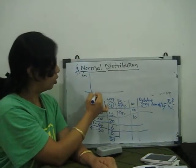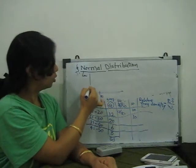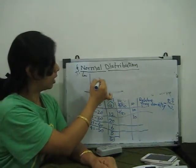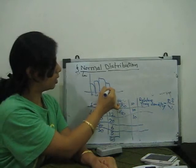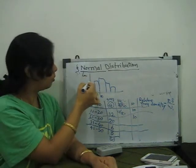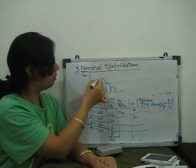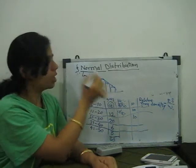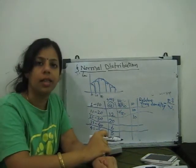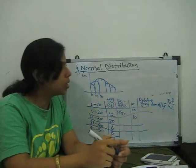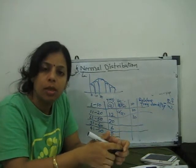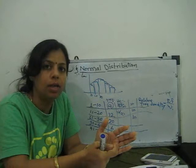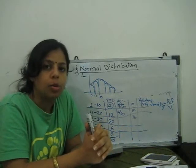Now we plot the histogram with marks on the x-axis (0, 10, 20, …) and relative frequency density on the y-axis. The histogram bars are drawn for each range. Then we draw a smooth curve over the histogram. This type of bell-shaped curve is what we always use for normal distribution.